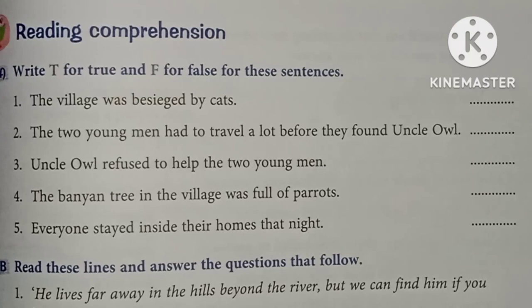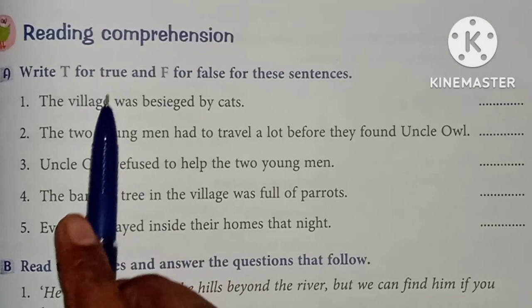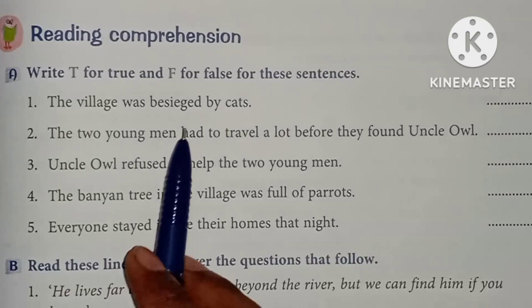So firstly I am going to start from question first. Question a mein aap loog dekh rahe hain — write T for true and F for false for these sentences. Yahaan pe jitne sentence hai, uske liye T likhna hai true ke liye, joh sahih hai uske liye, aur F likhna hai joh false hai uske liye. To one by one hum loog question pardate hai.